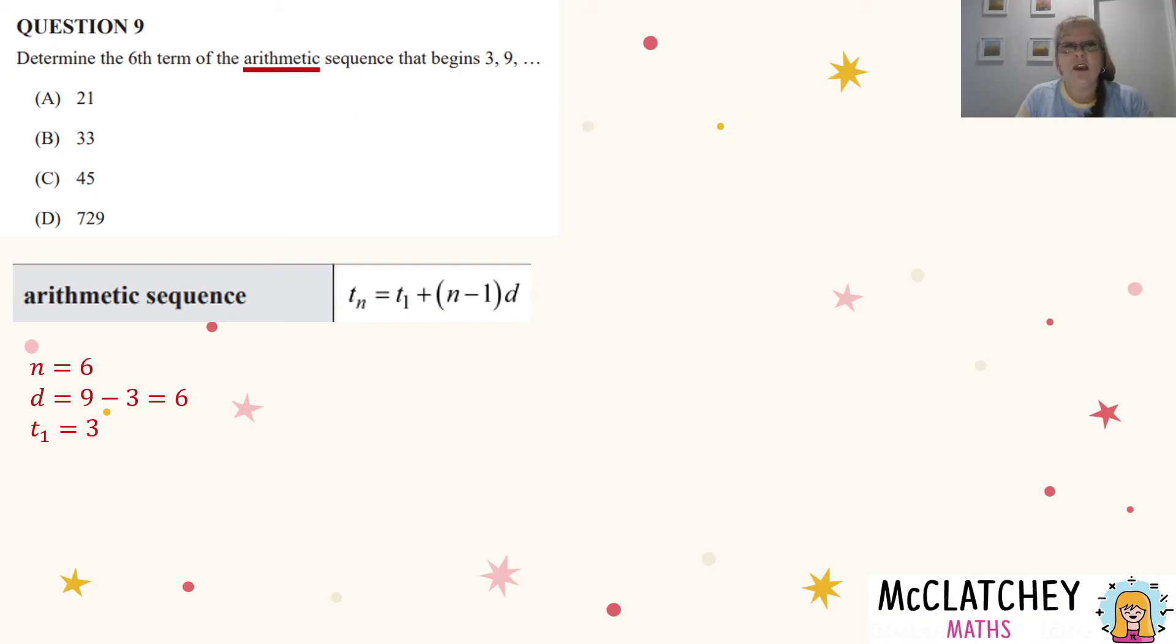So we can simply put this into our arithmetic sequence with substitution. So the sixth term will be three, which is our starting point, plus six take away one, which is five, multiplied by six. So five times six makes 30 plus three makes 33. So our sixth term is going to be B. Easy.